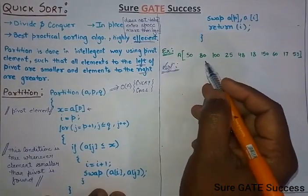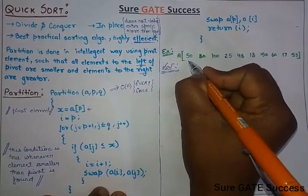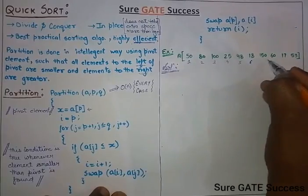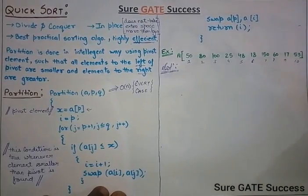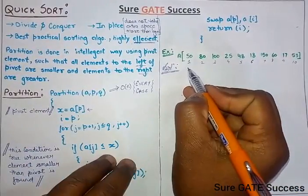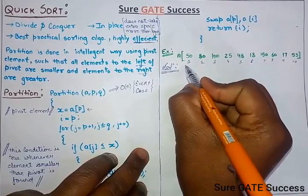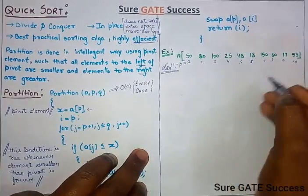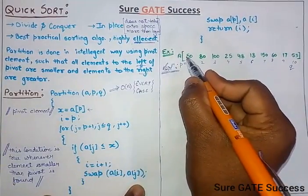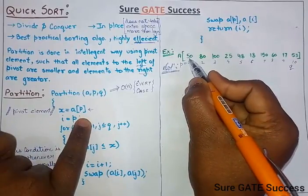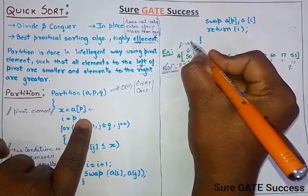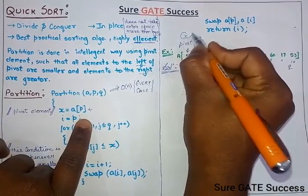We have an array of 10 elements. P will be the first index and Q will be the last index. First, we store A of P, that is A of 1, which is 50. We store 50 in X as the pivot element.